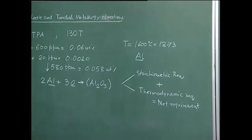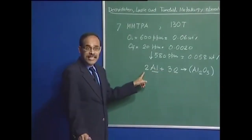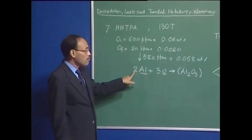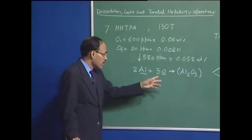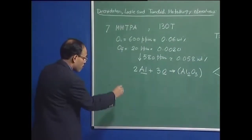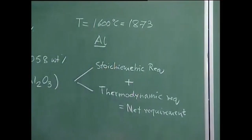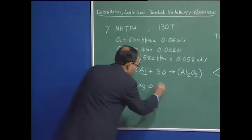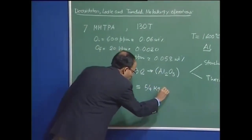The stoichiometric requirement can be found by looking at this equation: 27 × 2 = 54 kg of aluminium reacts with 3 × 16 = 48 kg of oxygen. So 48 kg of oxygen is equivalent to 54 kg of aluminium.